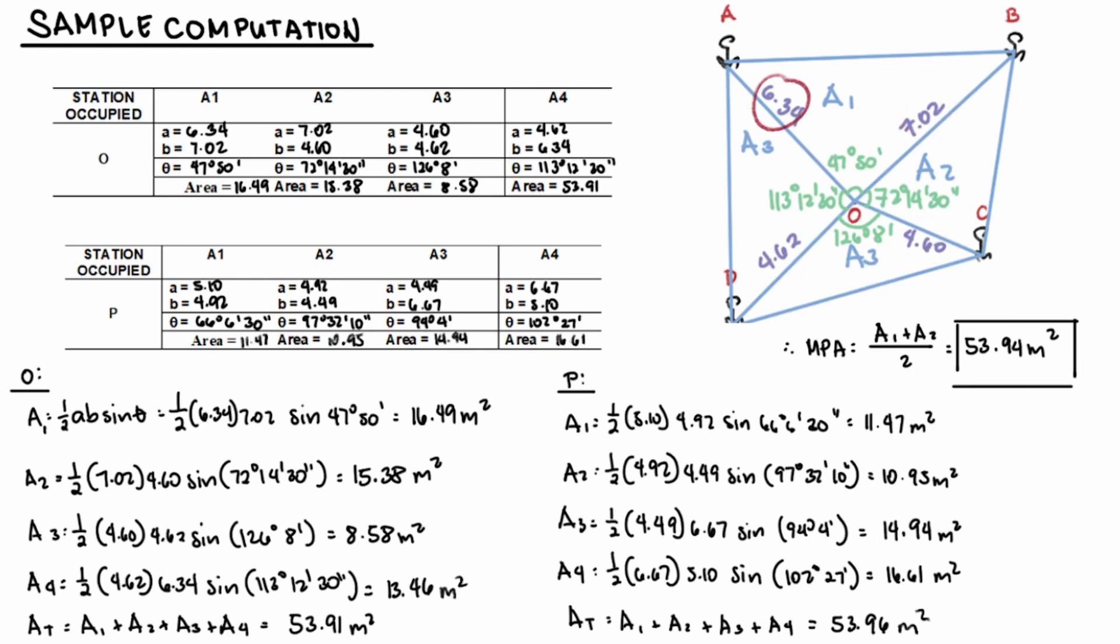Using the data gathered, you can get the area of each triangle which is just 1 half AB sine theta. Where A and B are the measured radial distances and theta is the central angle measured. So starting with A1, area is 1 half times 6.34 times 7.02 times sine of 47 degrees 50 minutes which is equal to 16.49 meters squared.